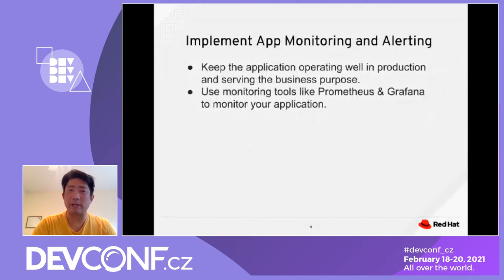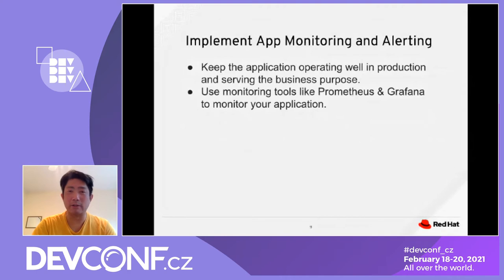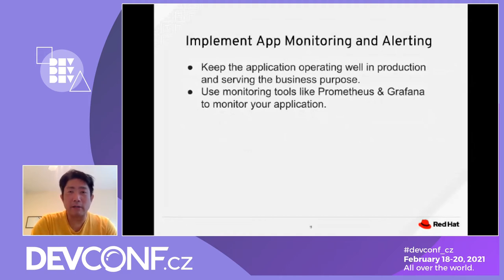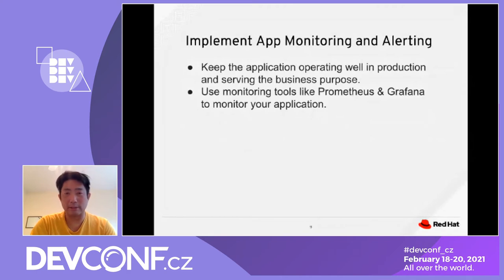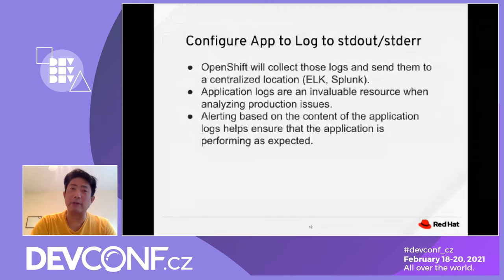Implementing application monitoring and alerting is also an important concept — it keeps the application operating well in production to serve the business. Tools such as Prometheus or Grafana dashboards allow you to monitor your application. Configure the application to log to standard output and standard error when there's an exception. OpenShift collects those logs and sends them to a centralized location such as ELK or Splunk. Application logs are a very important resource when you need to analyze production issues. Alerting based on the content of the application logs enables you to ensure the application is performing as expected.